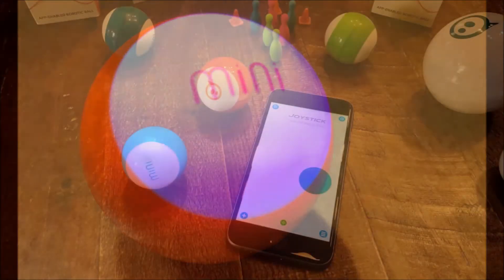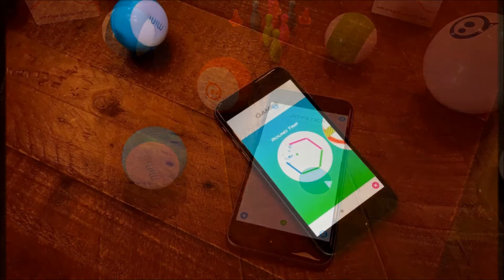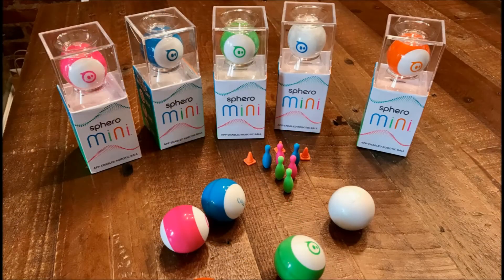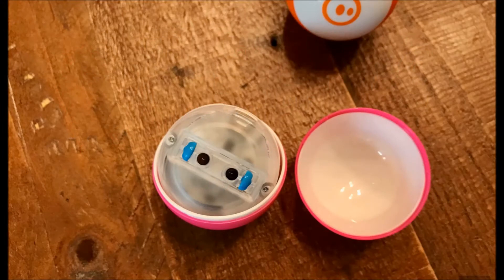The Sphero Mini comes with interchangeable color shells and includes a six-axis inertia sensor, a gyroscope, an accelerometer, LED lights and Bluetooth. It is compatible with devices running iOS 10 Plus and Android 5.0 and above. It has a battery life of 60 minutes and is charged using a micro USB cable.